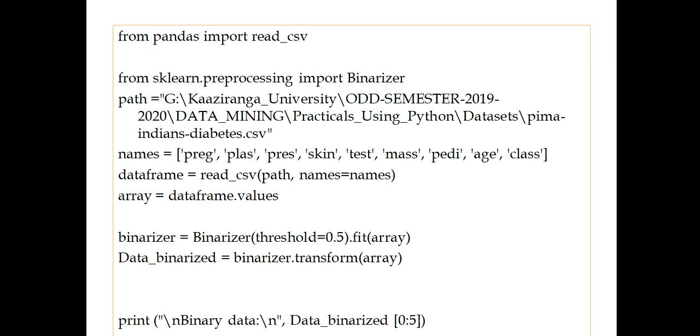That will be imported from sklearn preprocessing. So this is the path where our Pima Indians Diabetes CSV file is there. And these are the names of the different attributes. So let's create dataframe using read CSV path. The names will be same as it is. And let's create an array. That is array equals dataframe.values.